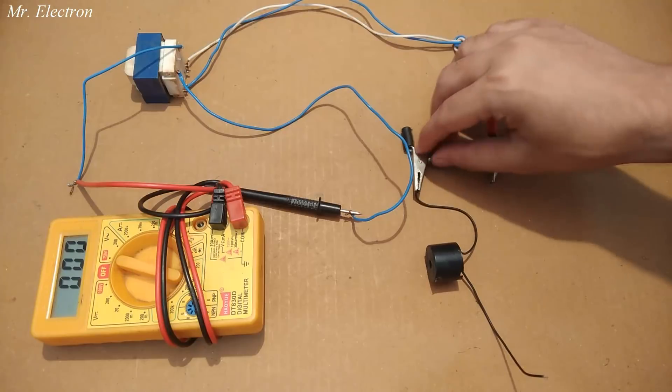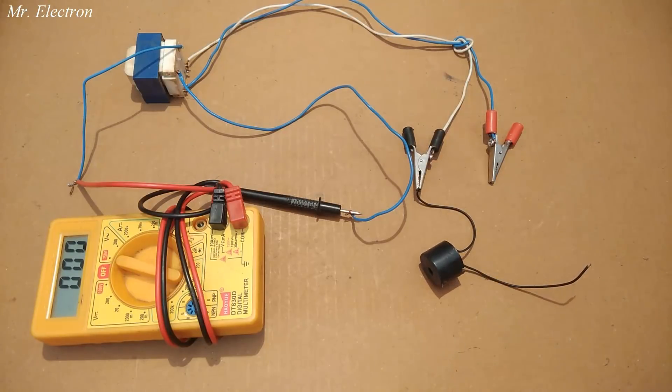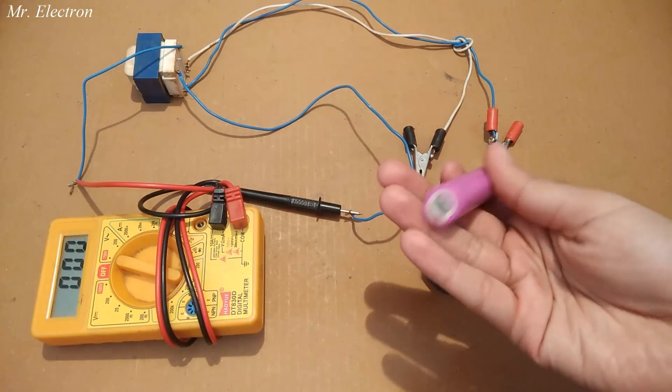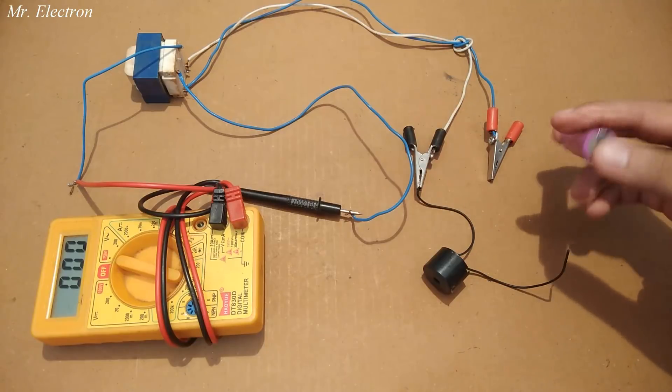As you can see, the buzzer is to be connected in series with the low voltage side of the transformer, and then the battery will be connected as shown here.